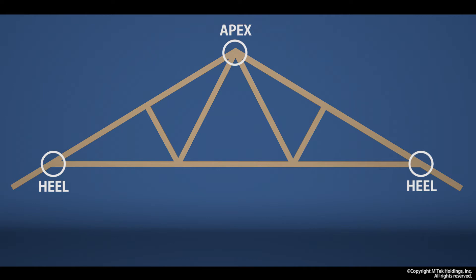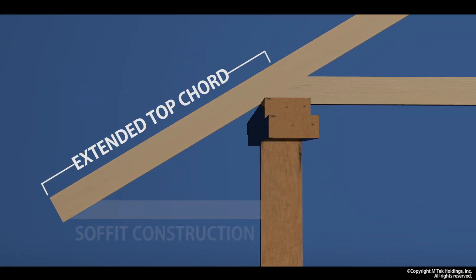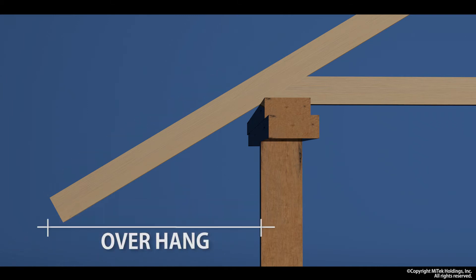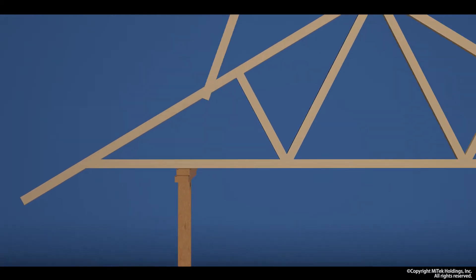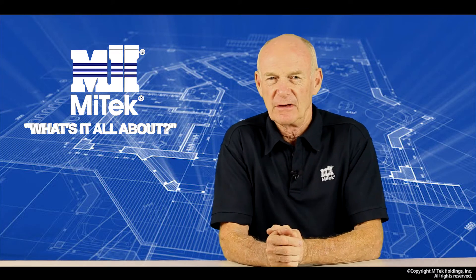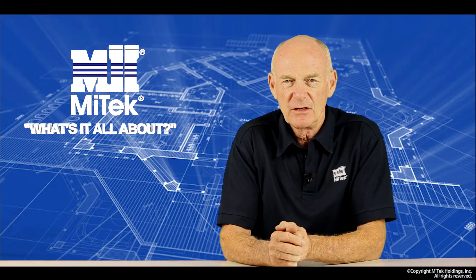Often the top chord is extended to provide a fascia construction for weather protection around the perimeter of the house — this part is called an overhang. There is also the situation where we may shift the heel of the truss outside the line of the external wall; this is called a cantilever. So there we have the basics of truss terminology.